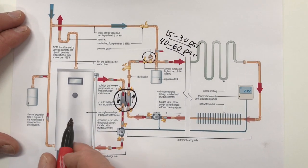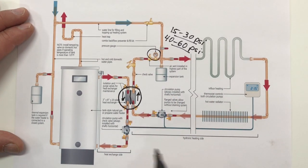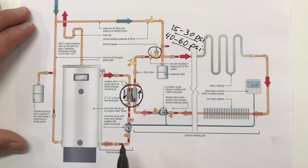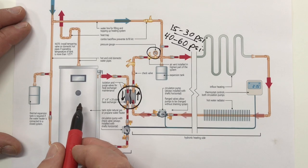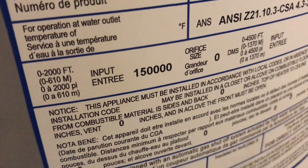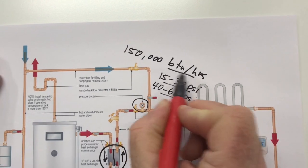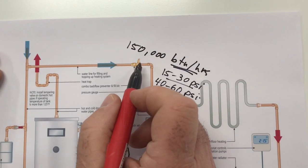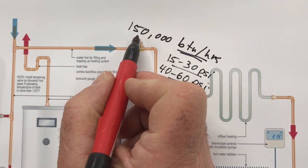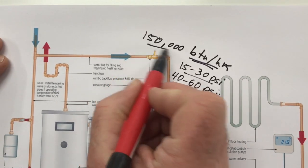So if a system like this is such a good way to power a hydronic heating system how come everyone doesn't use it? Well first of all the tank needs to be up to the job, it needs to have enough heat output. The tank I've installed at my own place has 150,000 BTU per hour input so that's plenty for heating needs as well as domestic hot water. Most standard tank style water heaters won't produce that much.